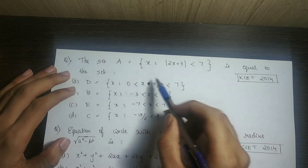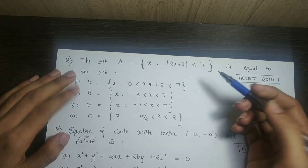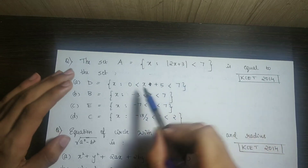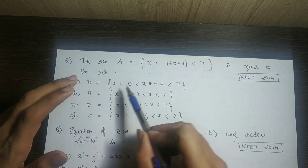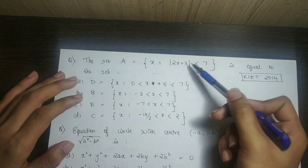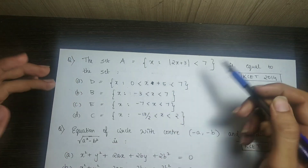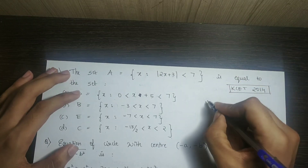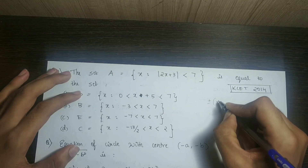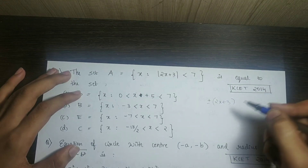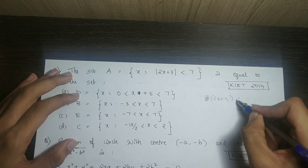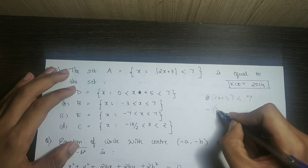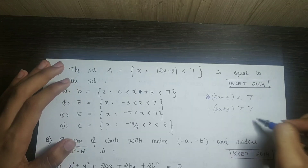Next question: find the set where the modulus of 2x plus 3 is less than 7. We use the modulus definition, splitting into plus or minus. For the positive case: 2x plus 3 less than 7, giving x less than 2. For the negative case: minus of 2x plus 3 less than 7, i.e., minus 2x minus 3 greater than 7.